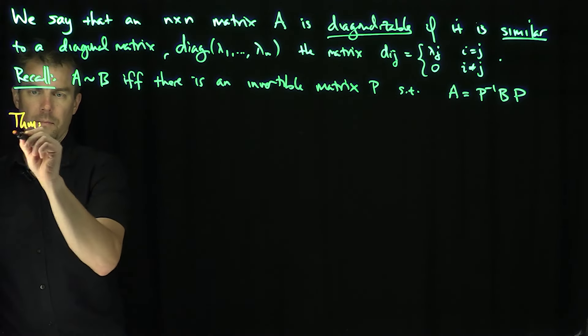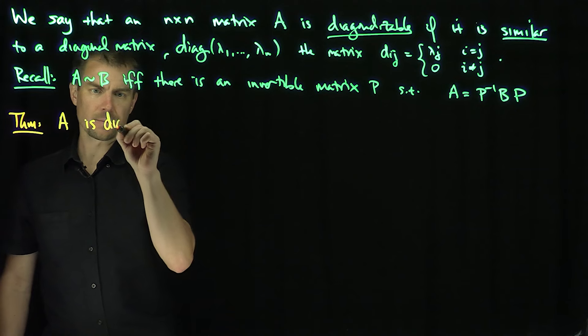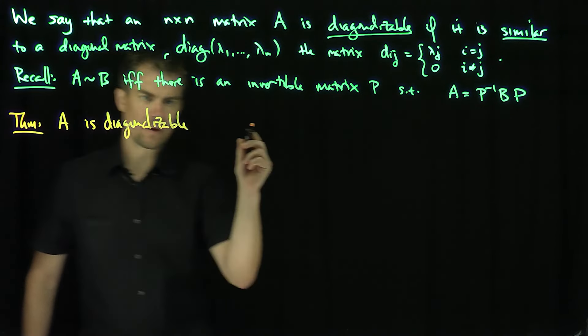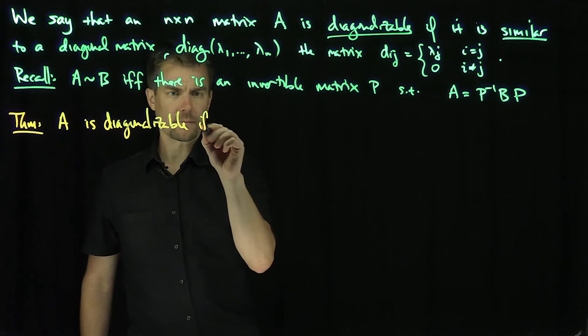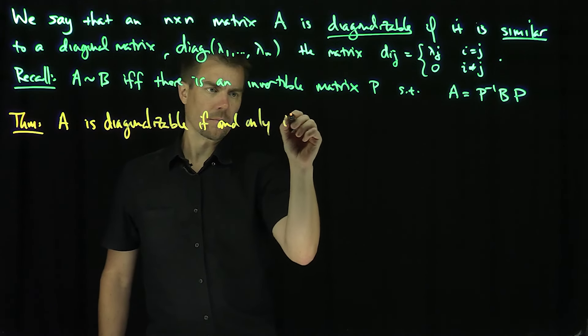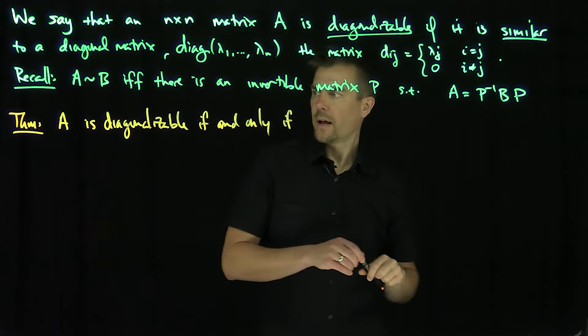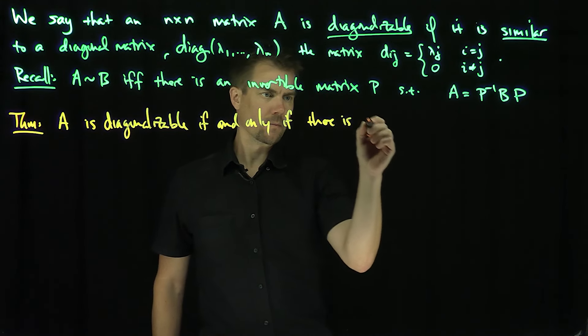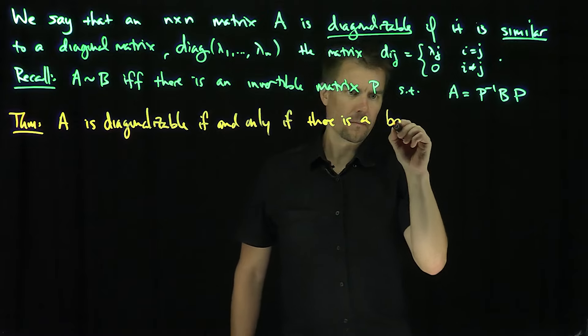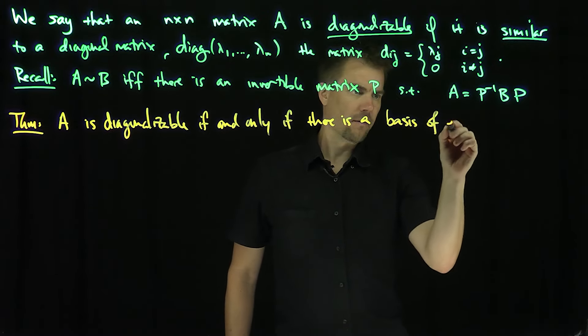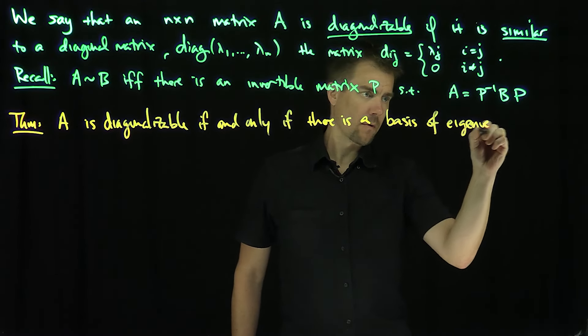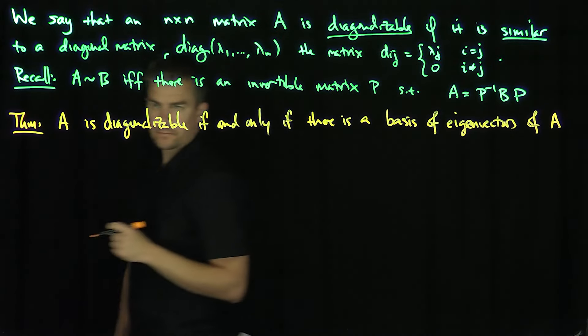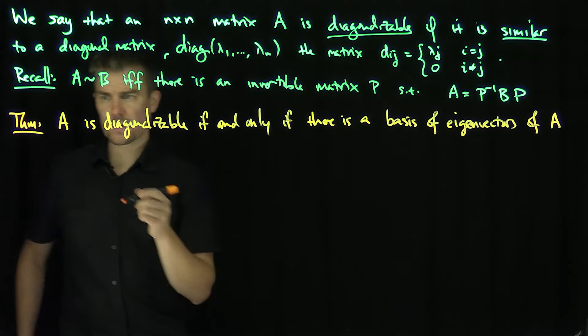Theorem: A is diagonalizable if and only if there is a basis of eigenvectors of A. Let's prove this theorem. Here's the proof.